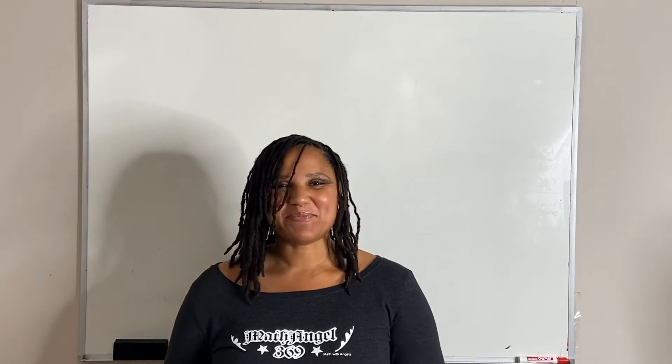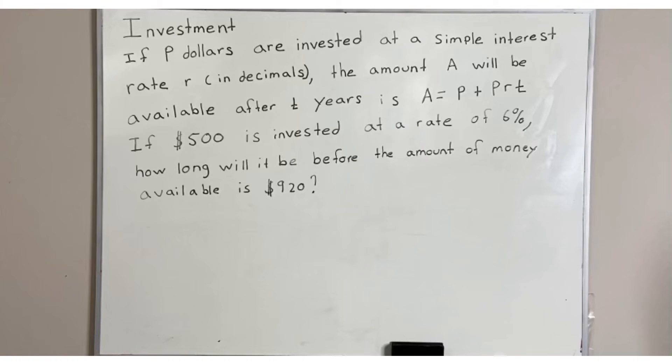Now let's look at our second problem. Investment. If P dollars are invested at a simple interest rate r in decimals, the amount A will be available after t years is A equals P plus PRT.